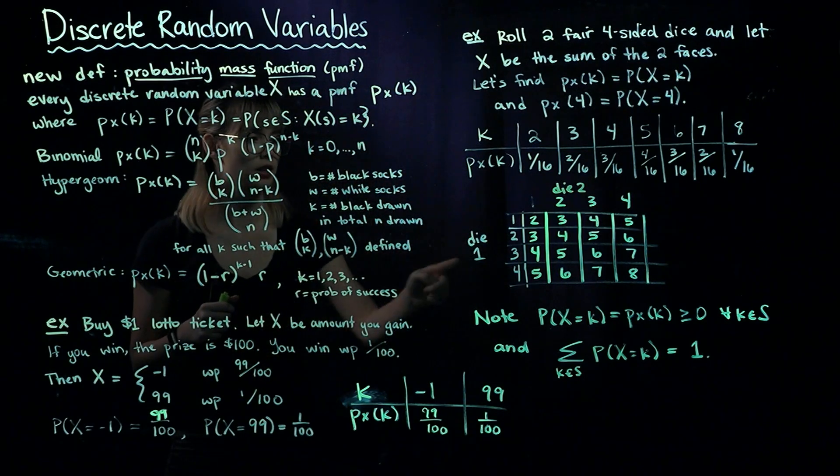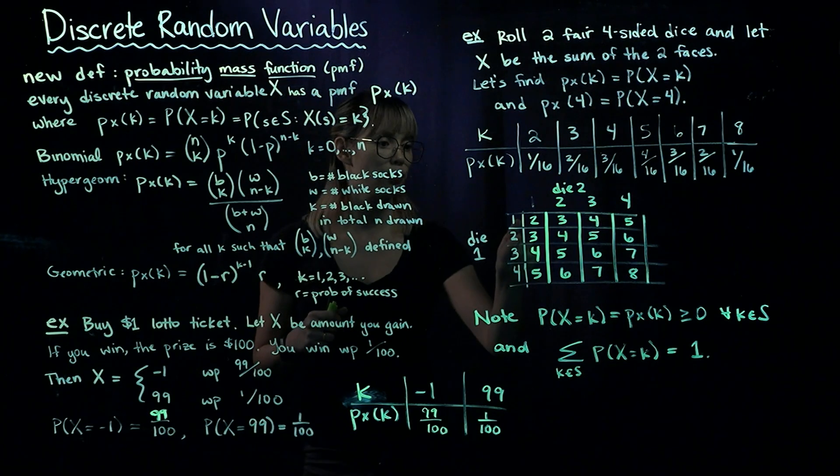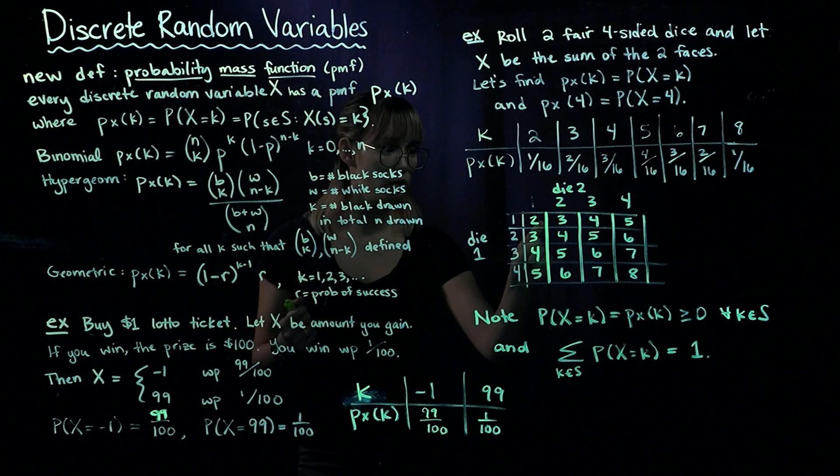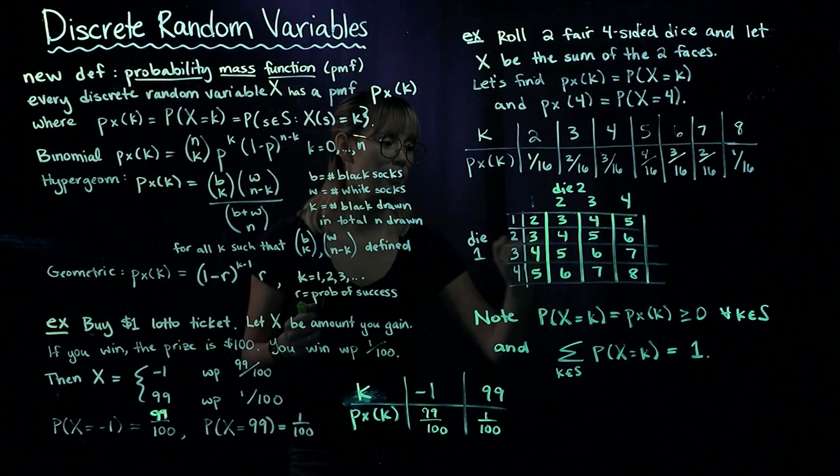Each die has sides 1, 2, 3, 4. If we get 1 and 1, the sum is 2. If we get 1 and 2, the sum is 3, and so on. I've filled in all the sums in the table.